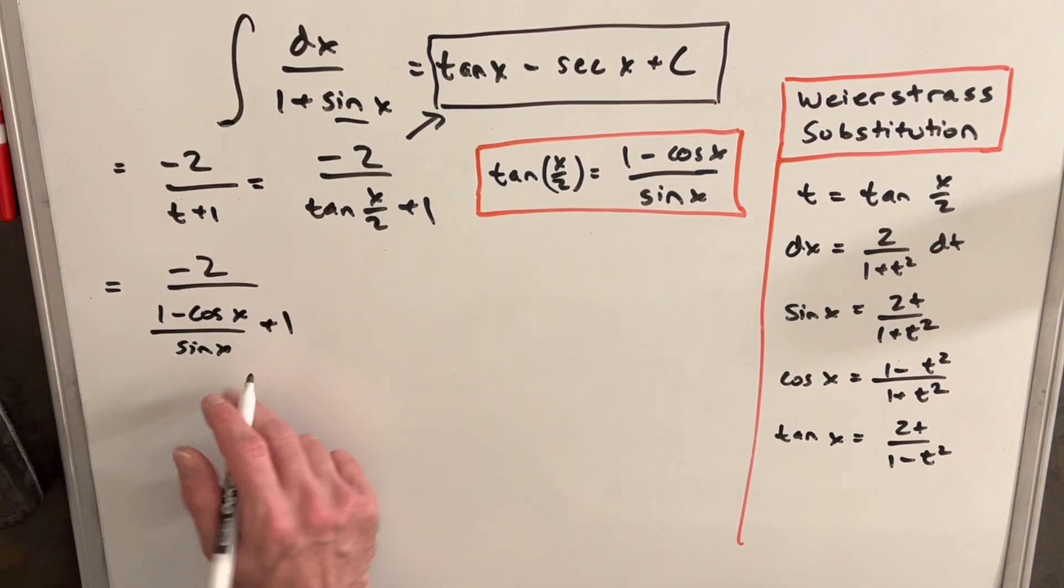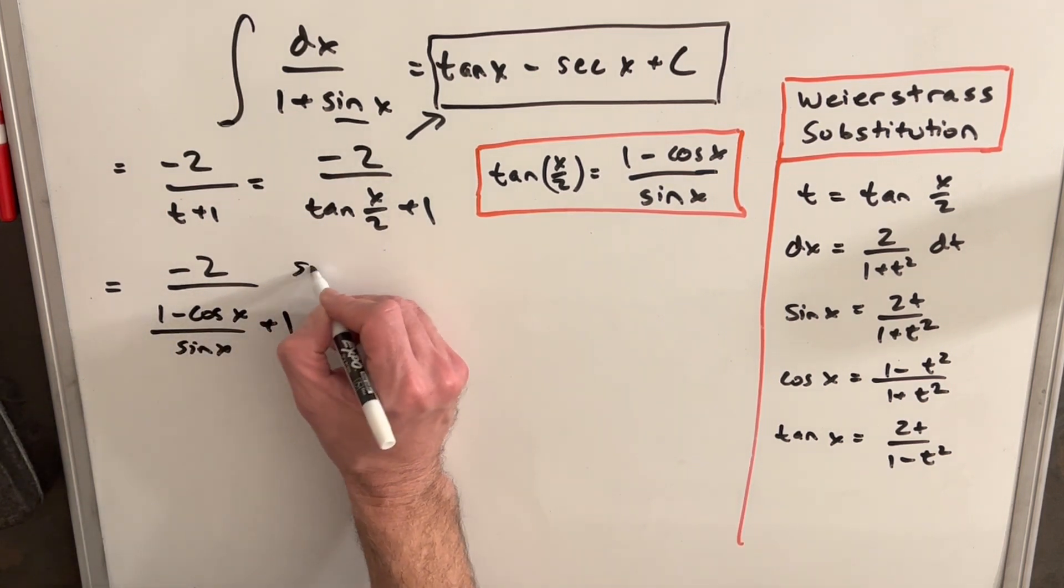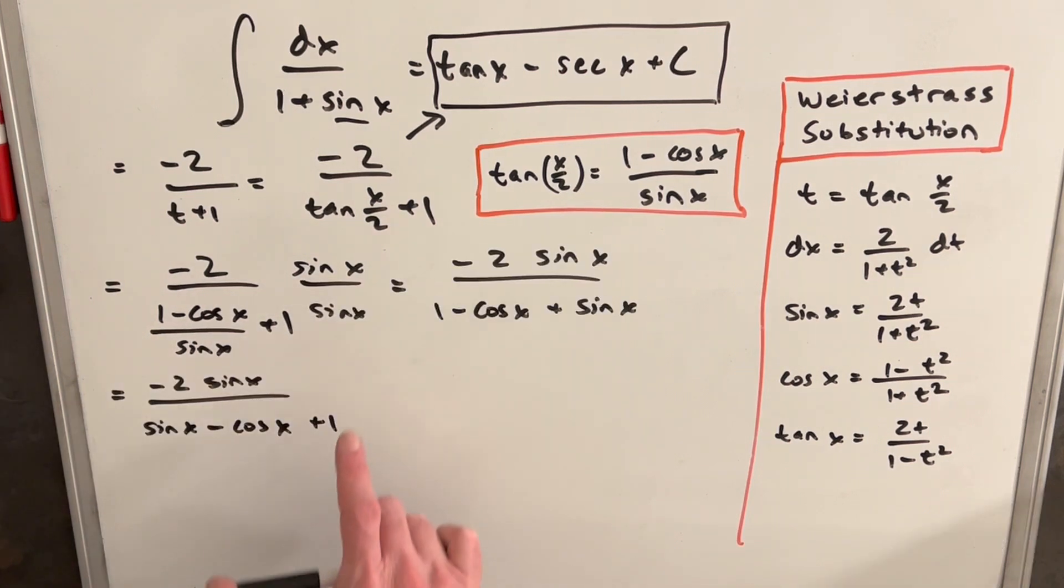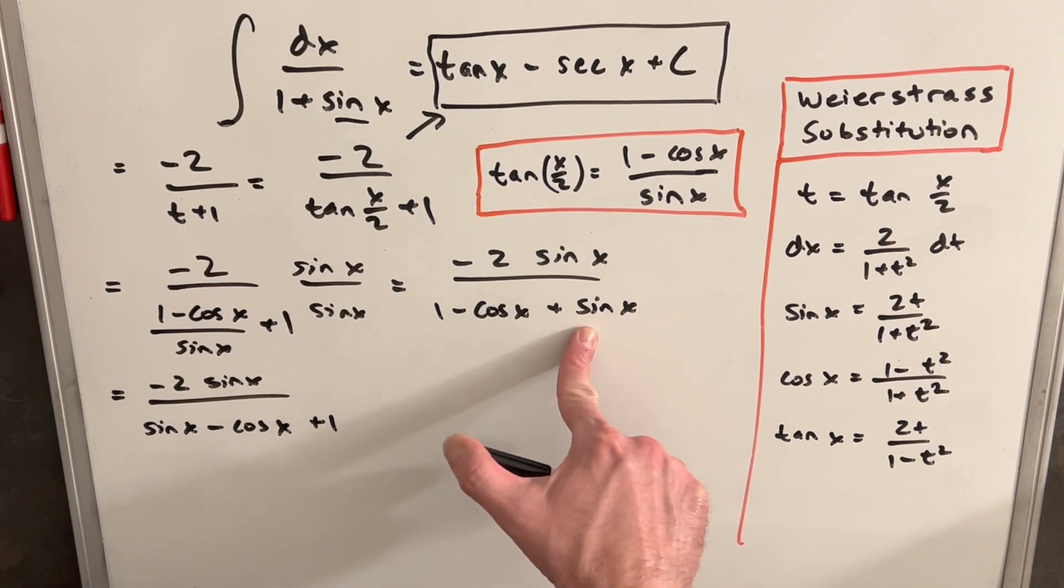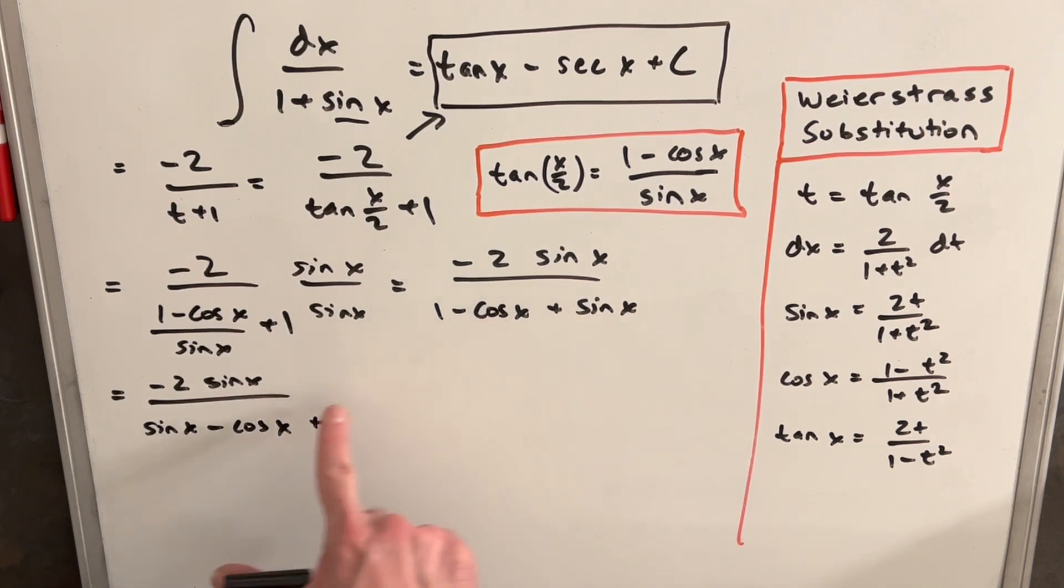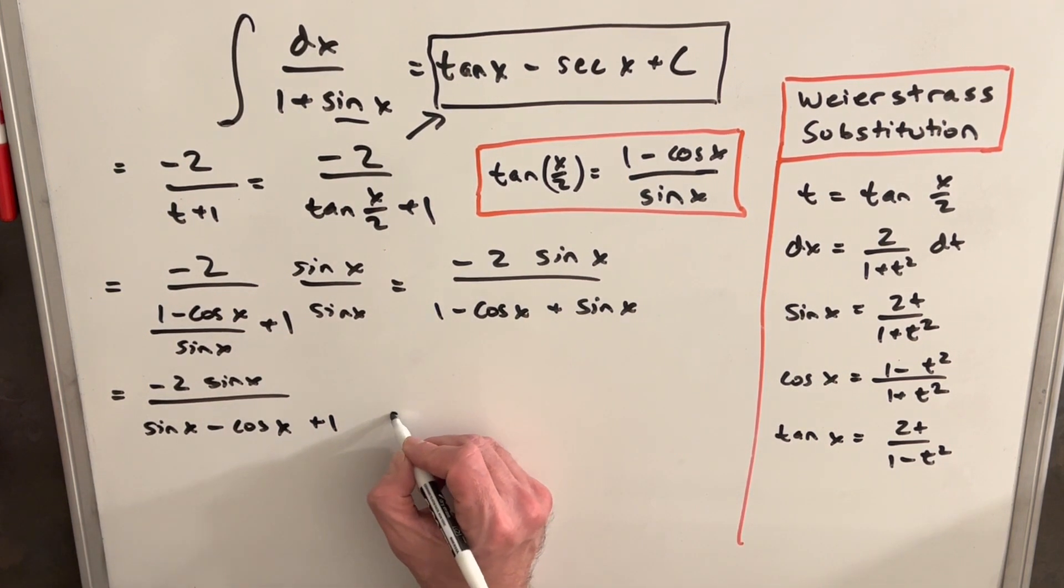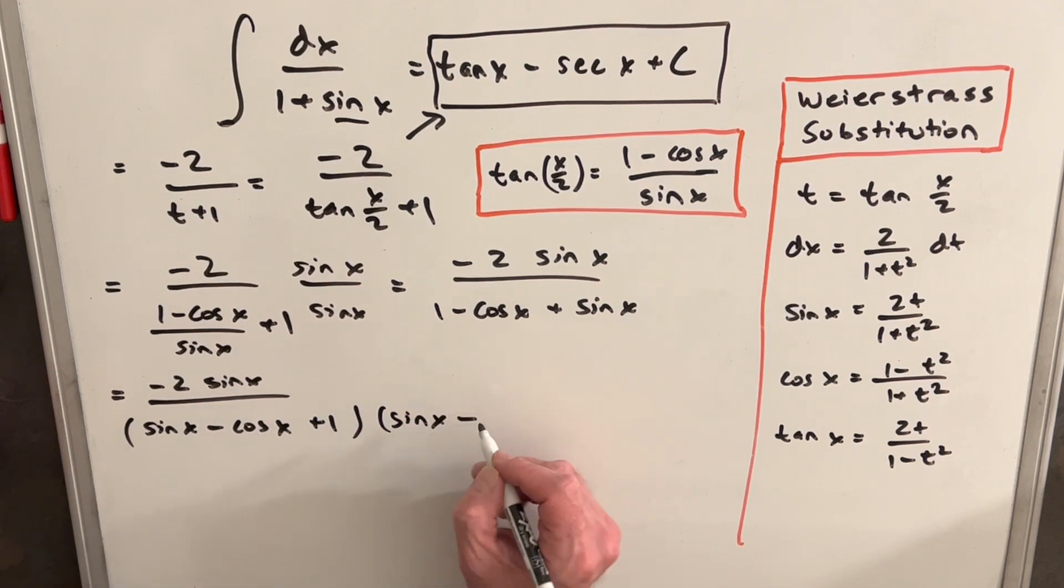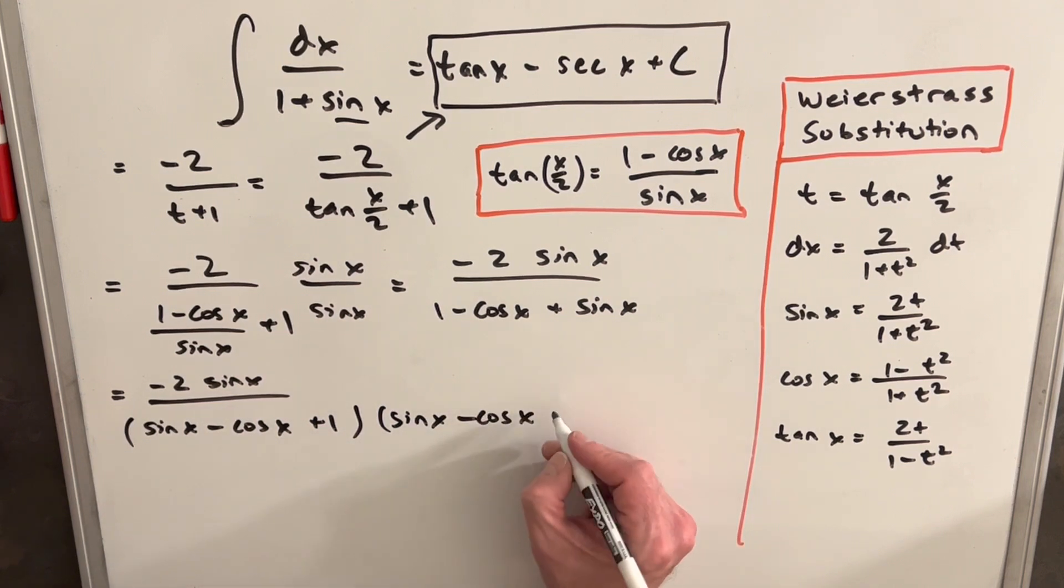But let's multiply a sine x through here, through on the top and bottom so that we can cancel out this because that's kind of ugly. Okay, so multiplying through by sine over sine, we clean it up a little bit over here. And then here, I just rearranged the order of the denominator, because what I want to do is multiply by the conjugate here. So I'm going to multiply by sine x minus cosine x.